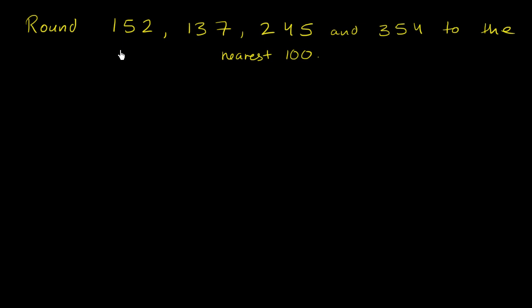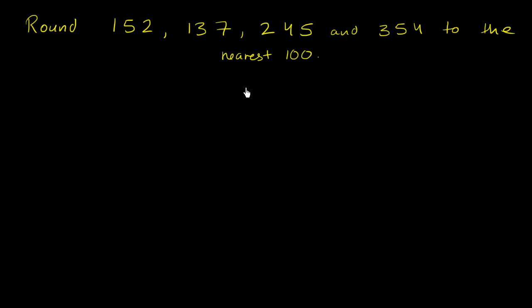We're asked to round 152, 137, 245, and 354 to the nearest 100, which is another way of saying round each of these numbers to the nearest multiple of 100. So let's think about them one by one.